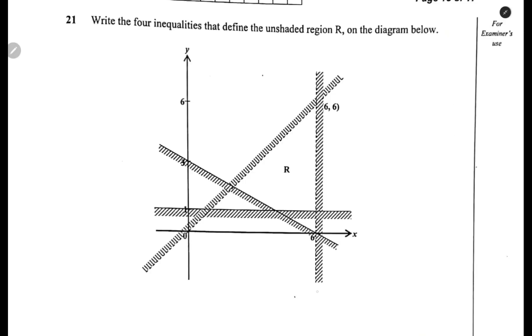Let us number these lines. The easiest one that we can find is line 1, then 2, 3, and 4. So that is the order that we are going to find the inequalities.